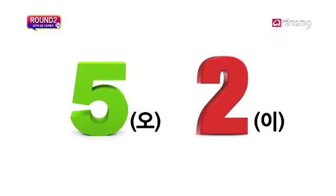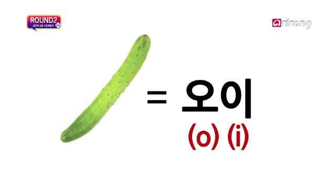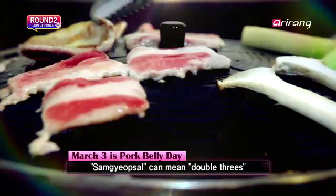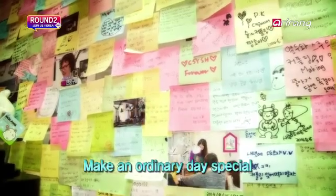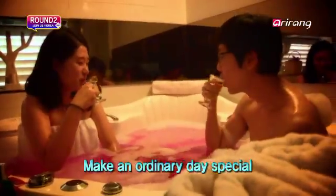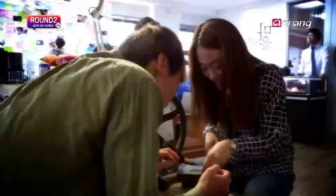I got it wrong! So Cucumber Day is the 1st of the 2nd — that's why I was so sad. They also have a day for eating samgyeopsal. The word can also mean multiple numbers — three S's. So Samgyeopsal Day is celebrated on March 3rd.